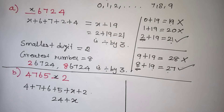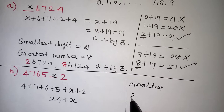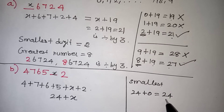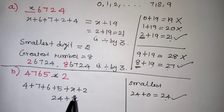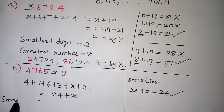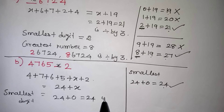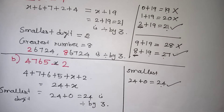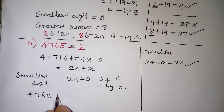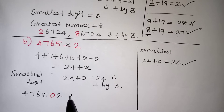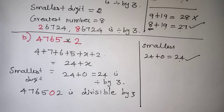So in the x place, what should be filled — we have to find the smallest number and the greatest number. For the smallest number, we start with 0: 24 plus 0 is 24. And 24 itself will come in the 3 table — 8 threes are 24. So 0 can be filled. The smallest digit is 0, because 24 plus 0 gives 24 which is divisible by 3. So the number becomes 4, 7, 6, 5, 0, 2 — the whole number will come in the 3 table. This is the smallest number that can be filled in that place.